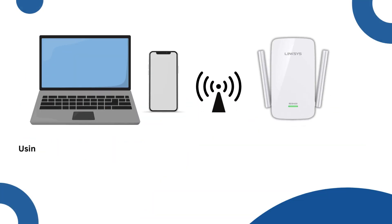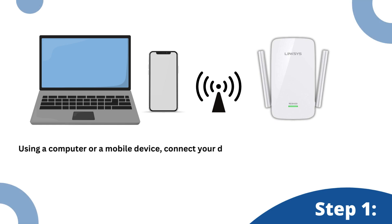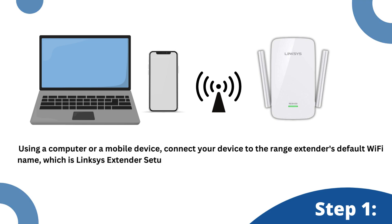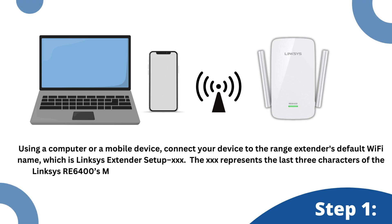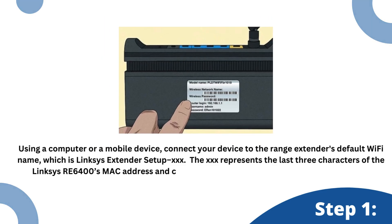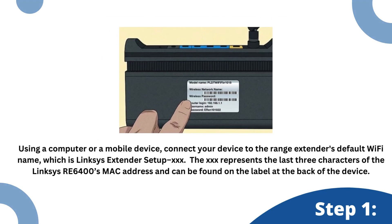Using a computer or a mobile device, connect your device to the range extender's default Wi-Fi name, which is Linksys Extender Setup XXX. The XXX represents the last three characters of the Linksys RE6400's MAC address and can be found on the label at the back of the device.